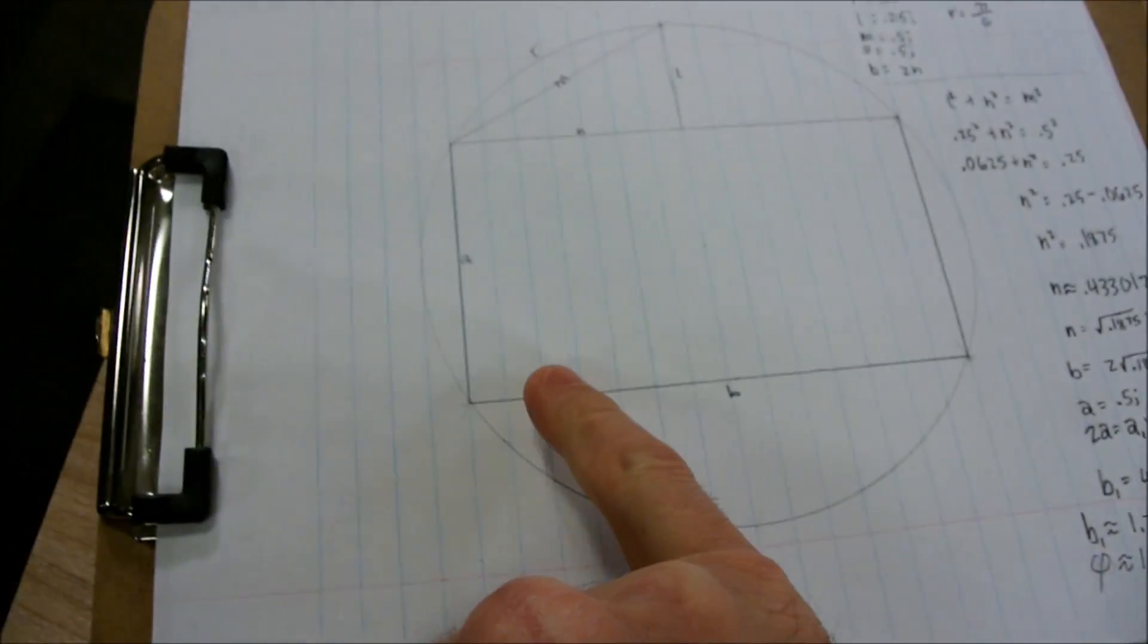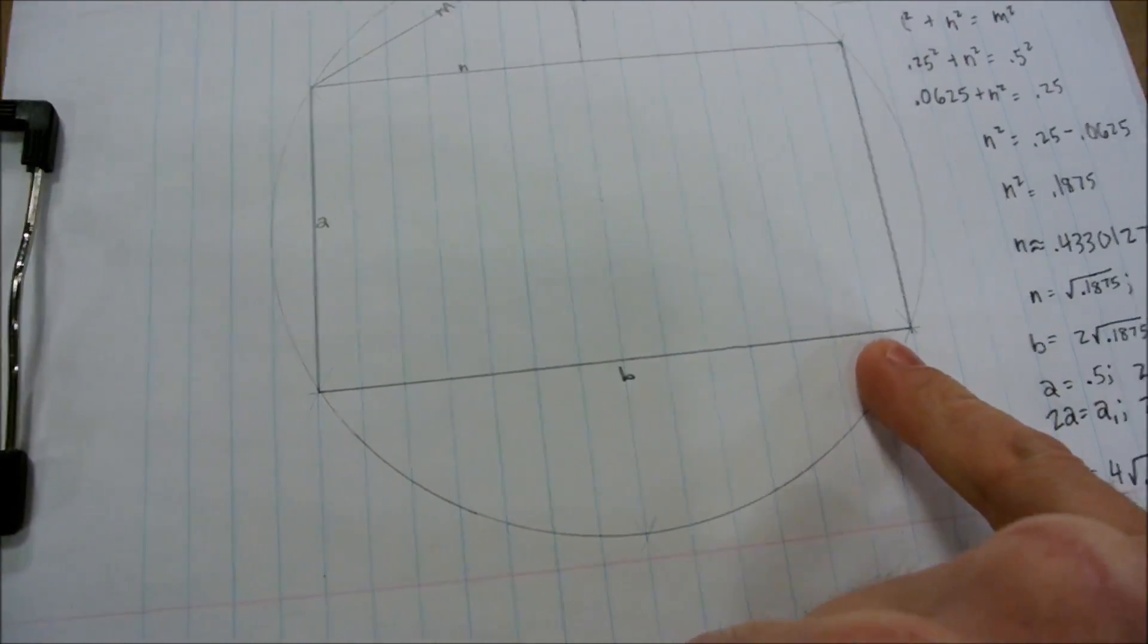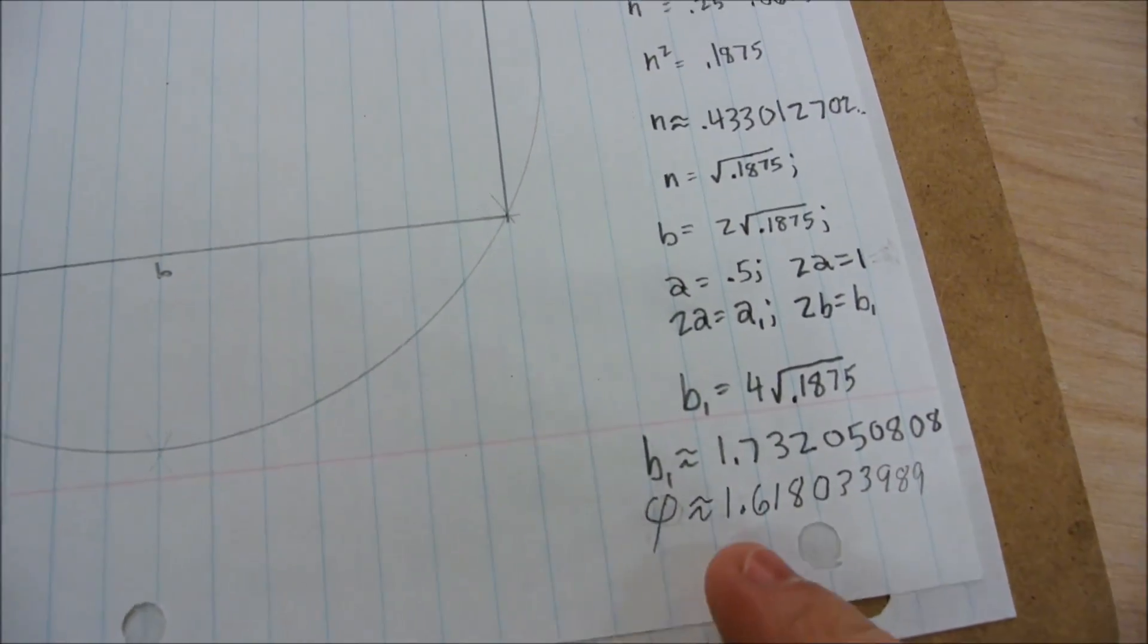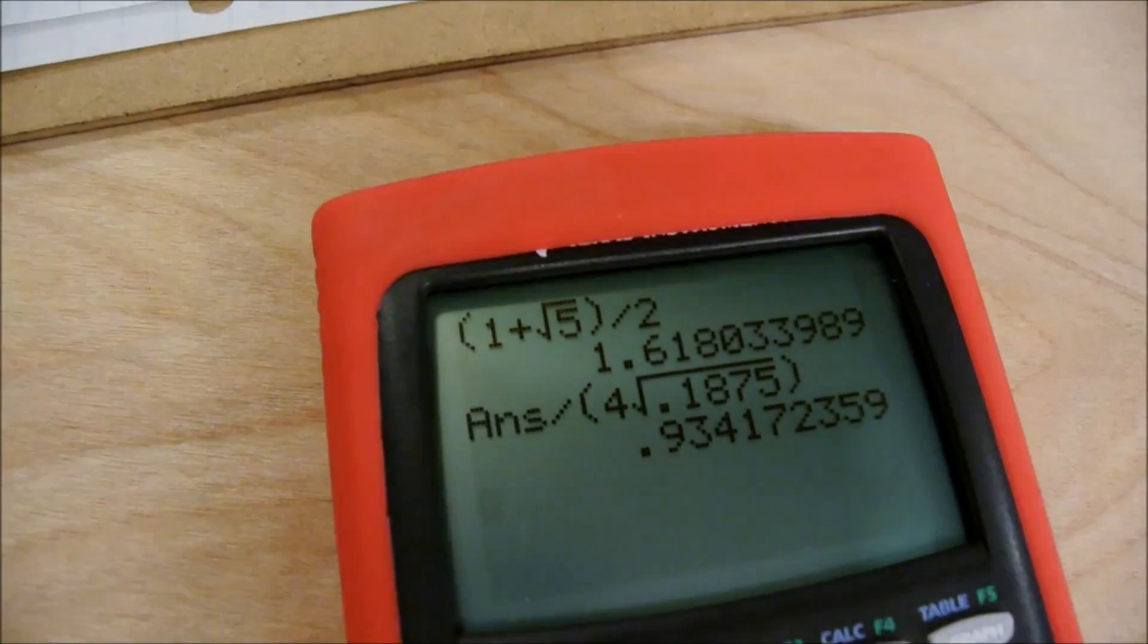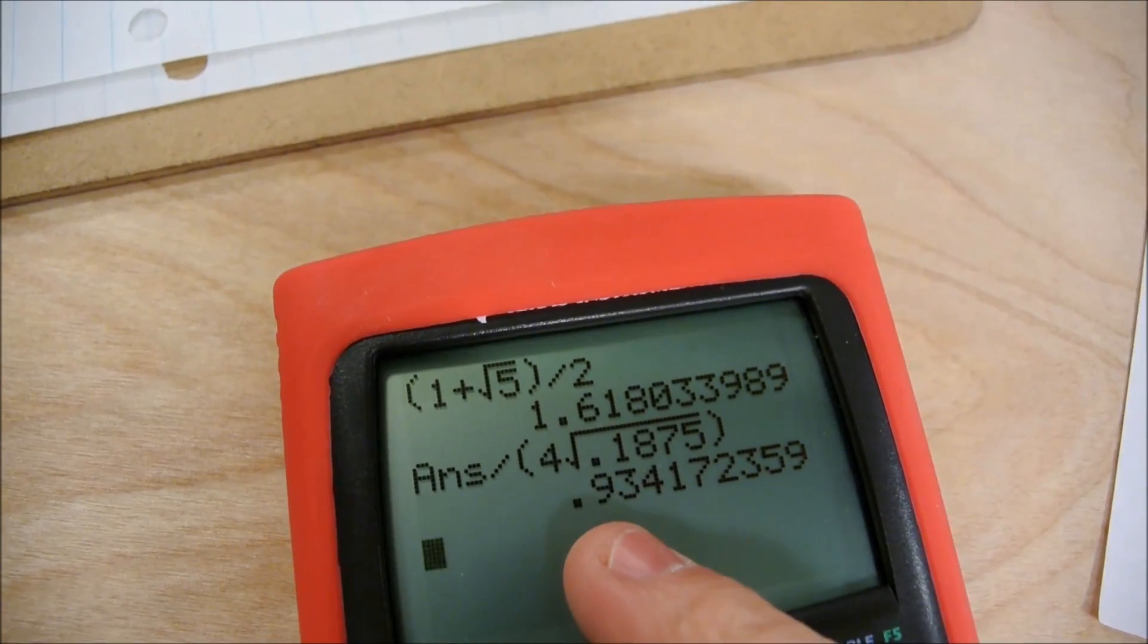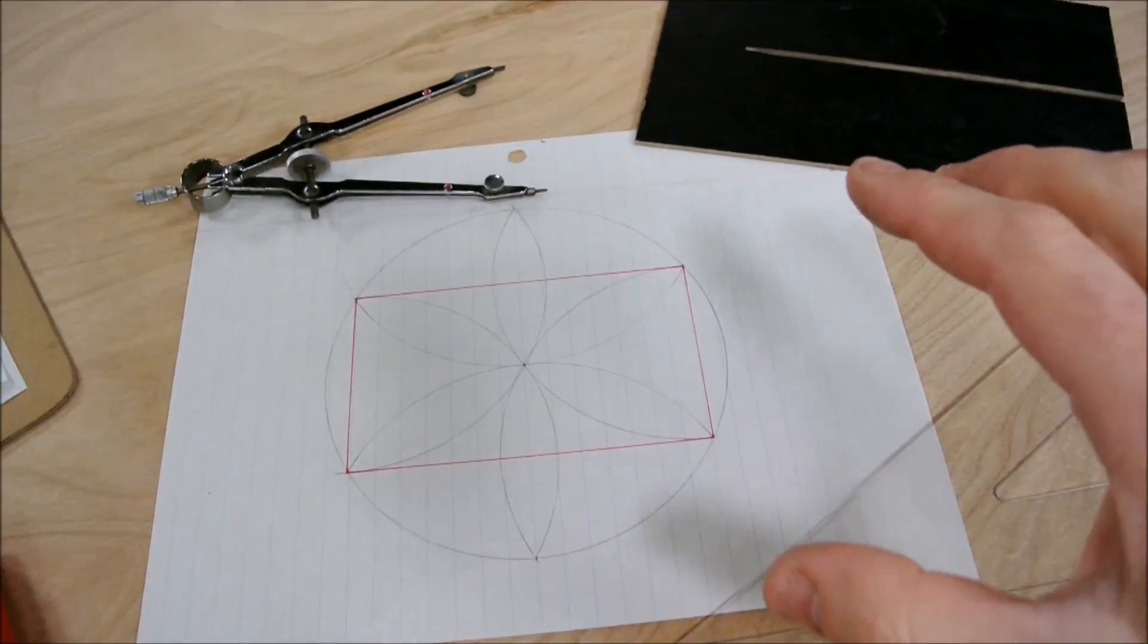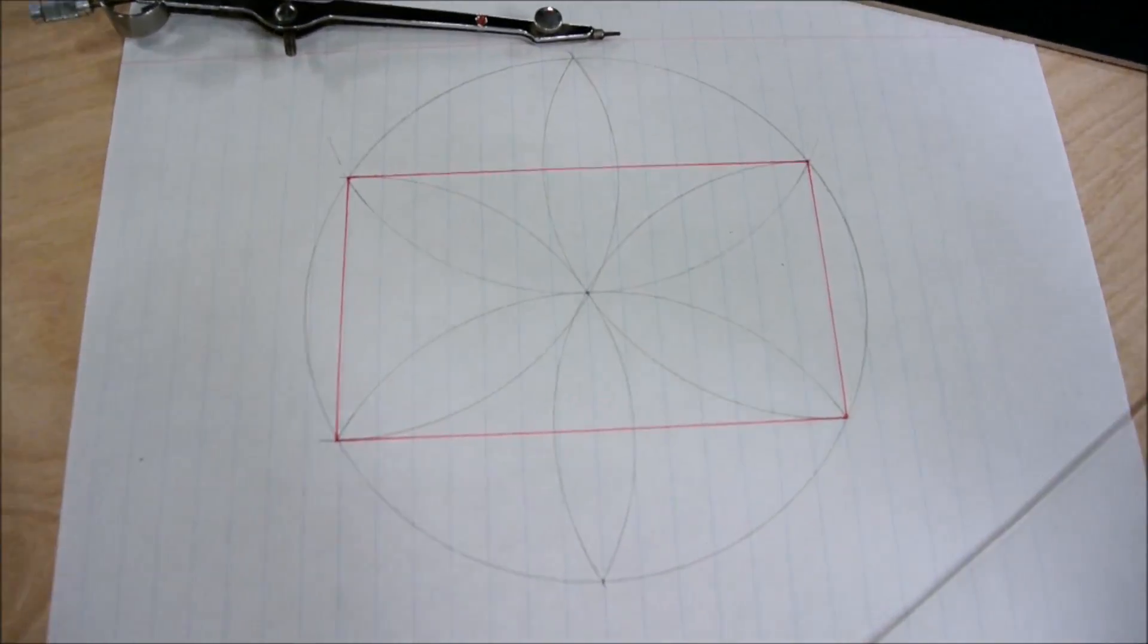It was real close. It turned out to be 1.7-something, whereas the golden number is 1.6-something. And if we compare those two numbers, like I did here, you can see that this is about 93% close to being a golden rectangle. So, this is a quick and easy approximation if you want to draw one real fast.